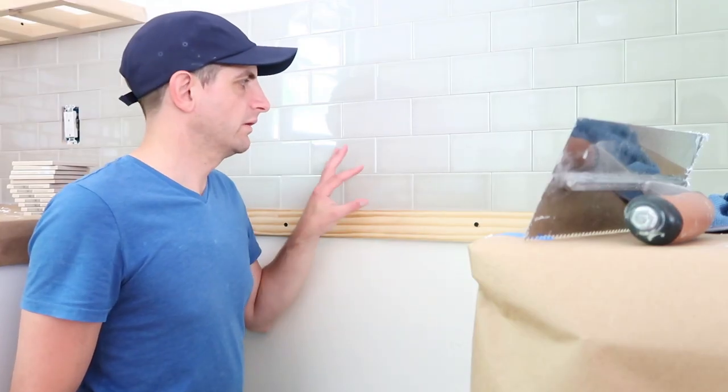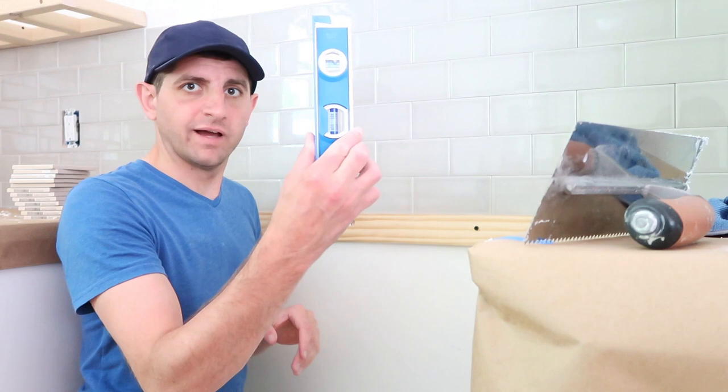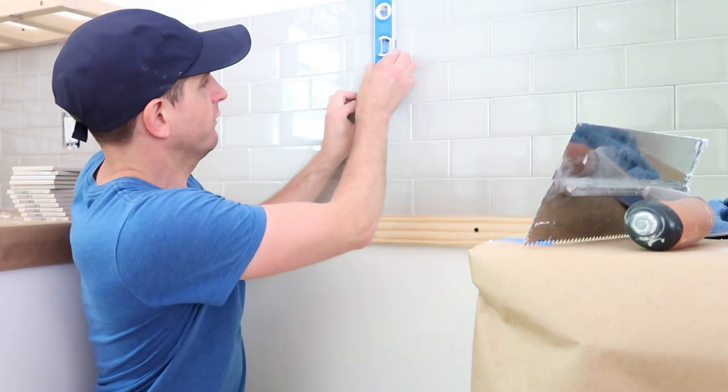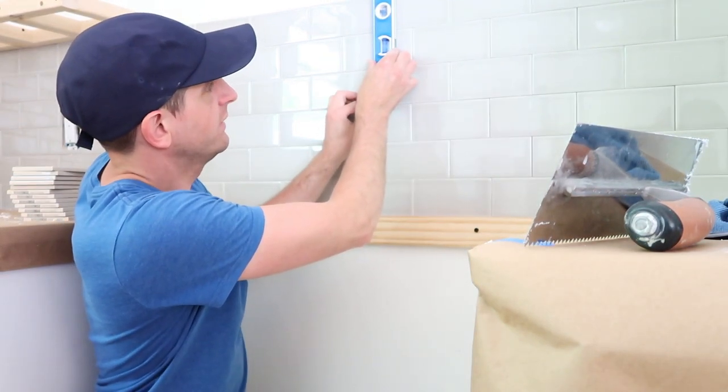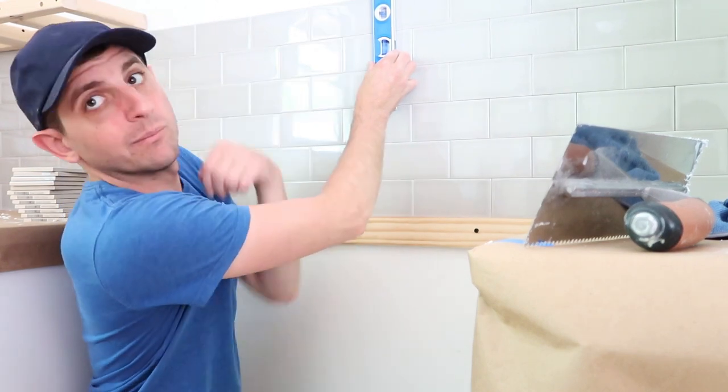A quick tip for subway tile in a running bond pattern, which is what we're using here where they overlap each other half: a tiny little torpedo level always comes in handy and you want to just throw that up against one of your seams, skip patterns, make sure you're level and just make sure your seams line up top to bottom.